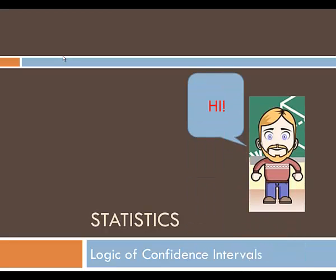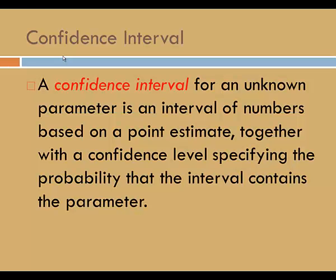Hey everybody, this is Rhett. Welcome to Statistics. In this video, we'll learn about the logic of confidence intervals. A confidence interval for an unknown parameter is an interval of numbers based on a point estimate, together with a confidence level specifying the probability that the interval contains the parameter. I'll discuss the logic of confidence intervals using an example.